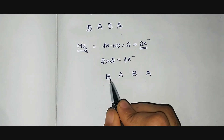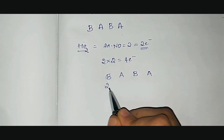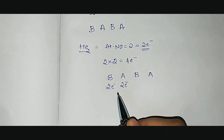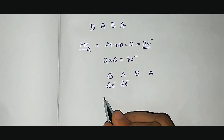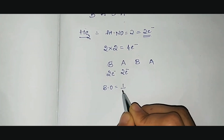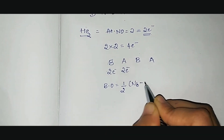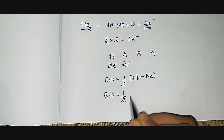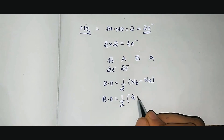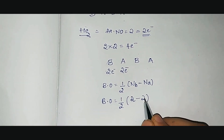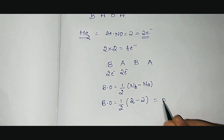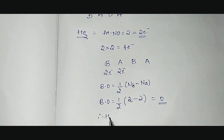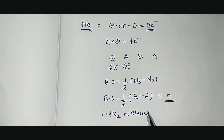With 4 electrons, each orbital accommodates 2. We place 2 in the bonding orbital, and the remaining 2 go to the antibonding orbital. The formula from molecular orbital theory is: bond order = ½ × (number of bonding electrons − number of antibonding electrons). Therefore, bond order = ½ × (2 − 2) = ½ × 0 = 0. The bond order of He₂ is 0, meaning He₂ does not exist.